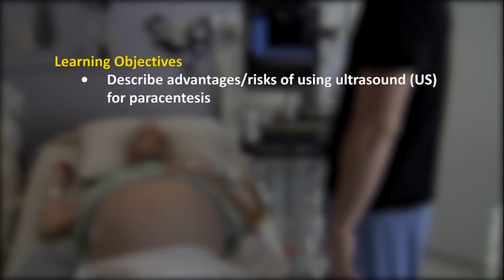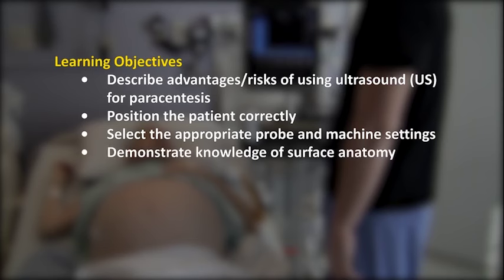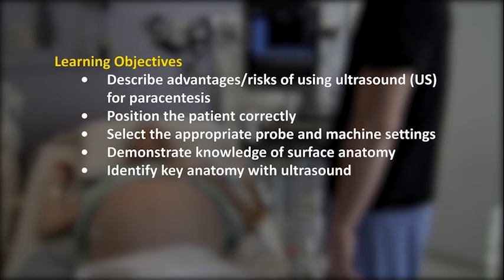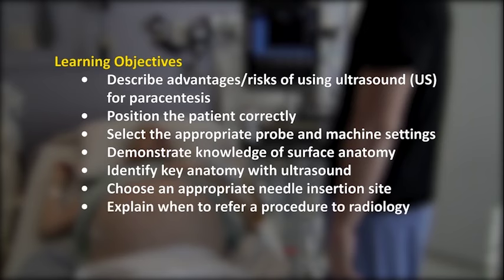At the end of this module, the learner should be able to describe the advantages and risks of using ultrasound for paracentesis, position the patient for optimal fluid visualization, choose the appropriate probe and machine settings, and enter patient information prior to examination, demonstrate knowledge of surface anatomy, identify surface vasculature and intra-abdominal organs and fluid, choose an appropriate needle insertion site, and identify situations in which bedside paracentesis is not appropriate and the procedure should be referred to radiology.